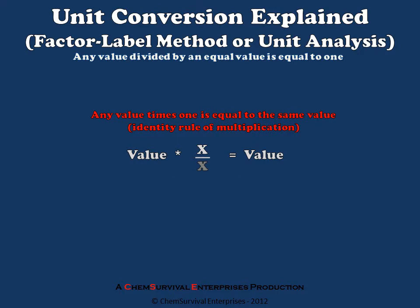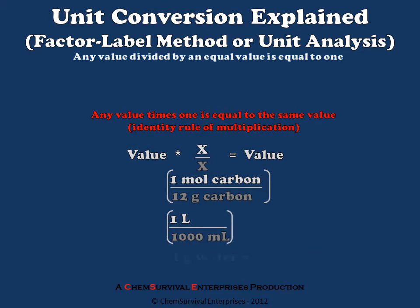This means that I can multiply an equation by one mole of carbon over 12 grams of carbon, or by one liter over 1,000 milliliters, or by one gram of water over one milliliter of water. Each of these values can be used within a chemical calculation without changing the overall value of what it is I'm modifying by doing so. And this is the root principle on which unit conversion and unit analysis work.